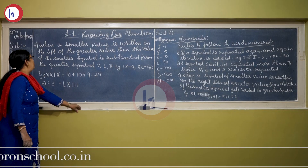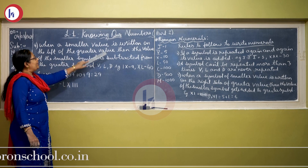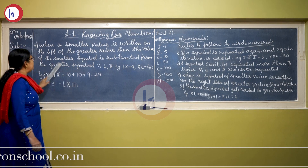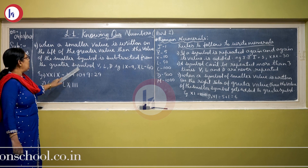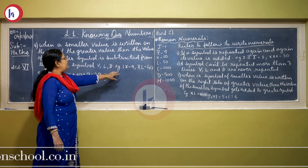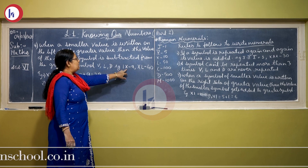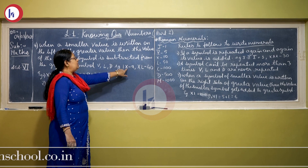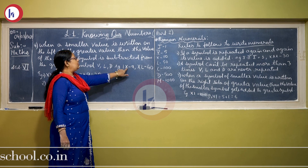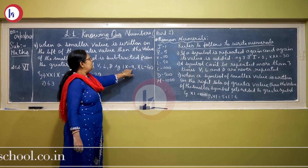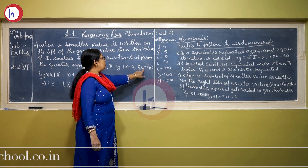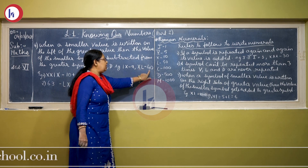Now the fourth rule: when a smaller value is written on the left side of the greater value, then the value of the smaller symbol is subtracted from the greater symbol. For example, IX: I is 1 and X is 10, so 10 minus 1 is 9. Same way XL: X is 10 and L is 50, so 50 minus 10 is 40.